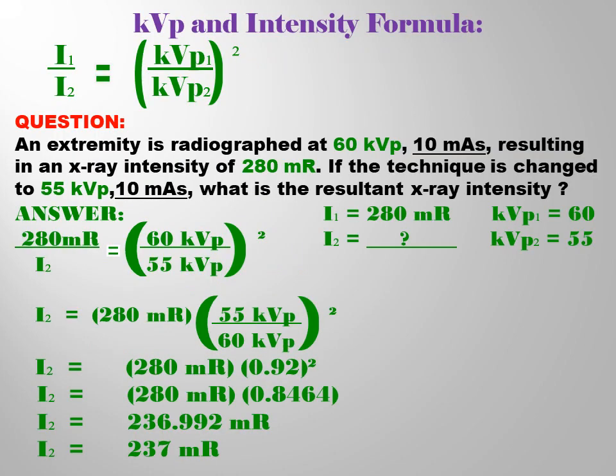KVP and intensity formula. I sub 1, or initial intensity, over I sub 2, or final intensity, equals KVP sub 1, the initial KVP, over KVP sub 2, the new KVP, squared.